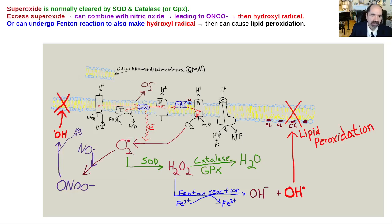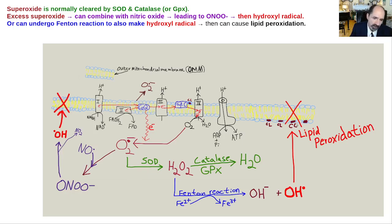Sometimes the superoxide can undergo a series of reactions and become a hydroxyl radical — there are actually several ways that can happen. The hydroxyl radical can destroy the intermitochondrial membrane through lipid peroxidation; it can also destroy proteins and DNA. The real question is why does this happen and what can we do to avoid it? There's a lot you can do, and we'll take a look at that.